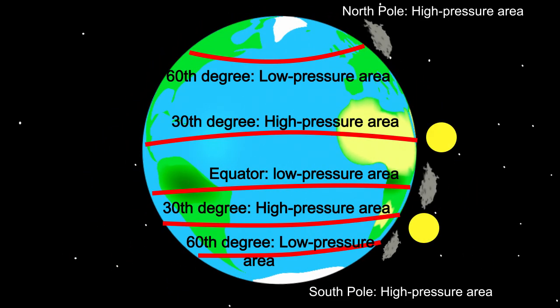In a low pressure area, it is often cloudy and it rains. In a high pressure area, it is often sunny.